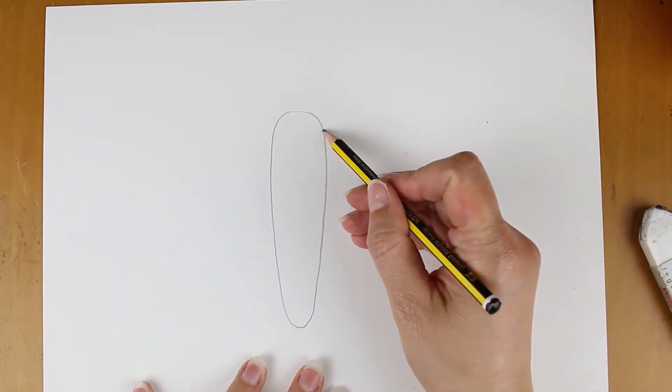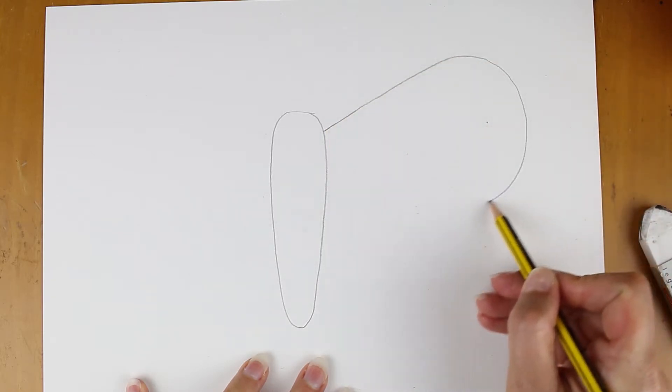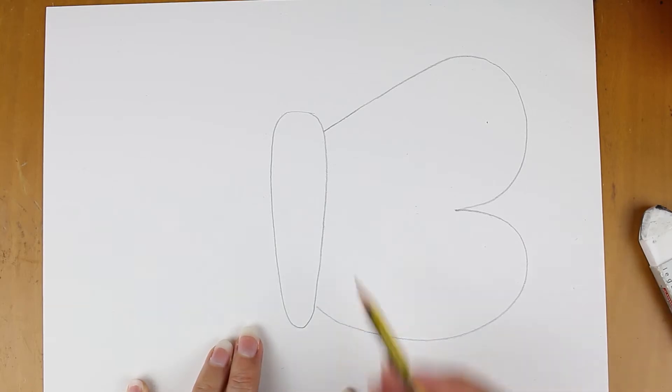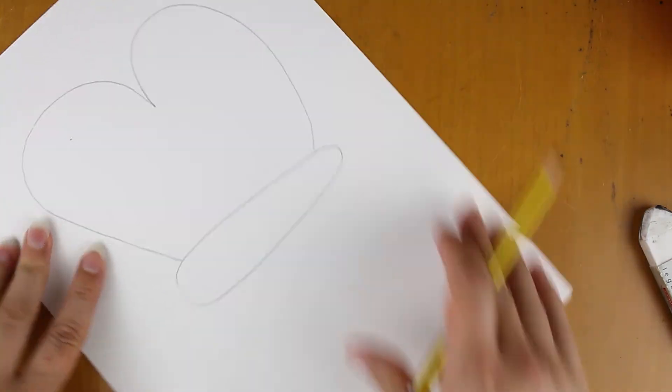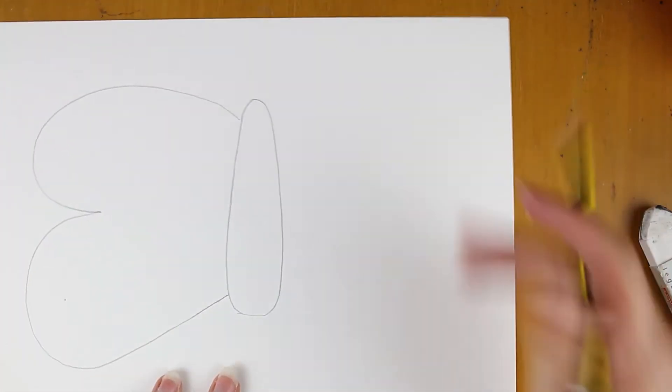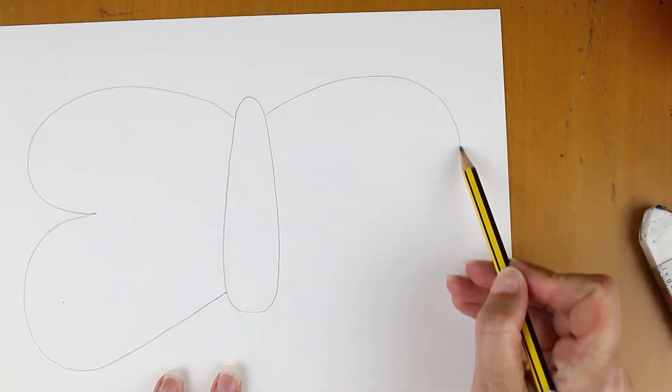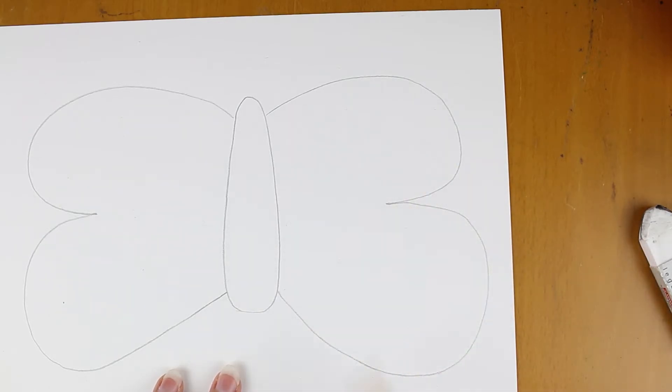To start, I'm going to draw a line coming up in a diagonal and then I'm going to continue drawing as if I'm drawing the number three. Can you see that? It looks like the number three. Then I'm going to turn the piece of paper around and draw a three on the other side, trying to make it match a little bit, but it doesn't have to be perfect. Both wings don't need to be exactly the same. In fact, it's more interesting if they're not.